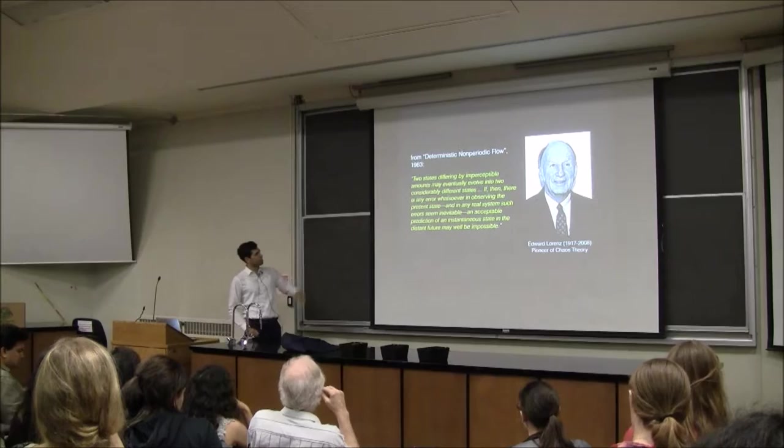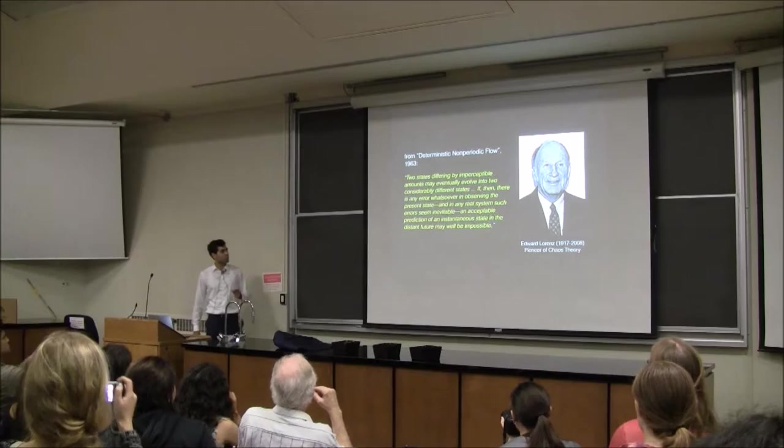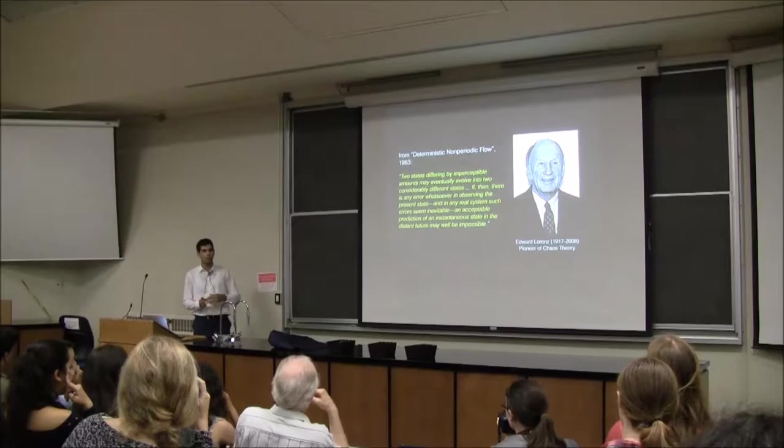Two states differing by imperceptible amounts may eventually evolve into two considerably different states. If there is any error whatsoever in observing the present state, and in any real system such errors seem inevitable, an acceptable prediction of an instantaneous state in the distant future may very well be impossible. We're going to explore this over the course of the lecture.